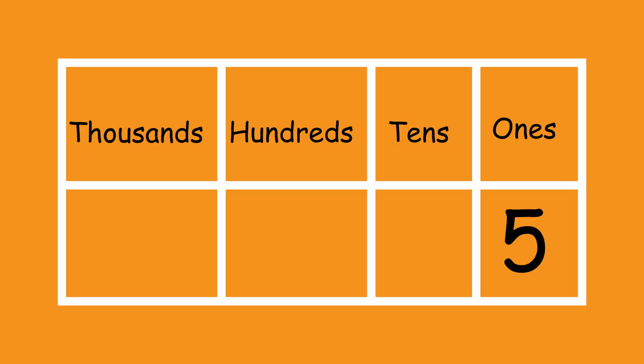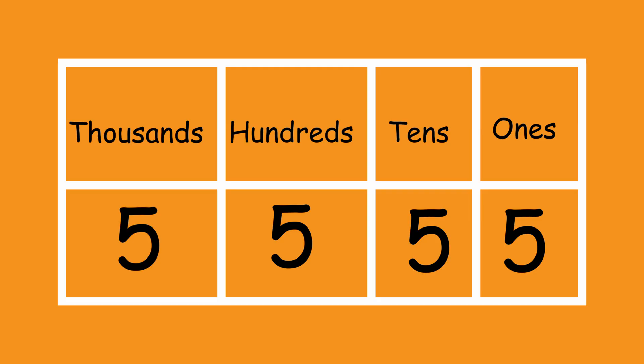Let us see how these positions work. For example, in the number 5,555 — five thousand five hundred fifty-five — you see it's just fives. But each of these fives is different; we call them different names depending on the place where they sit. Let's place each of the fives in each spot: five in the place of ones, five in the place of tens, five in the place of hundreds, and five in the place of thousands.